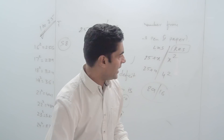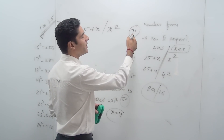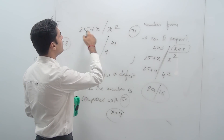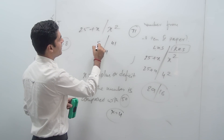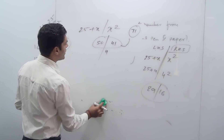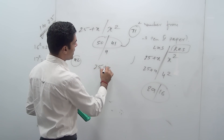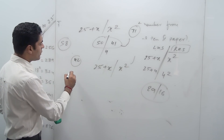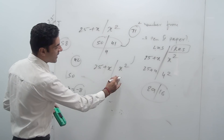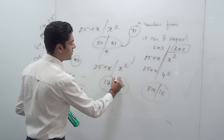Let's say I wanted to find the square of 71. Compare 71 with 50: surplus of 21. 21² = 441; retain 41, carry forward 4. 21 + 25 = 46, plus 4 carry forward = 50. So the answer is 5041, which is 71². One last thing: let's find the square of 42. Compare 42 with 50: deficit of 8, so x = −8. (−8)² = 64. 25 − 8 = 17. So the answer is 1764.